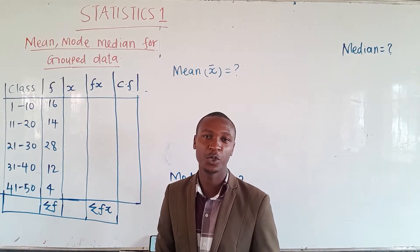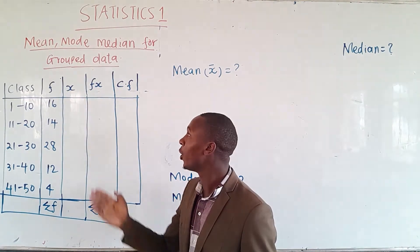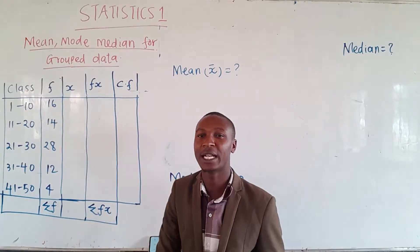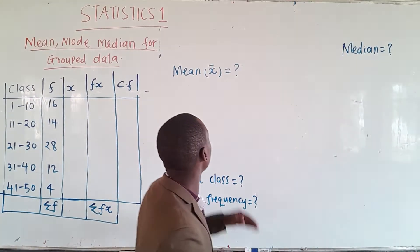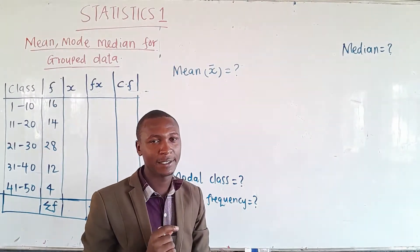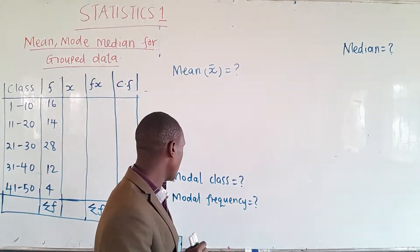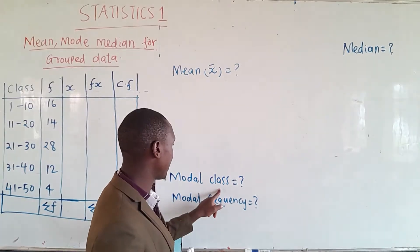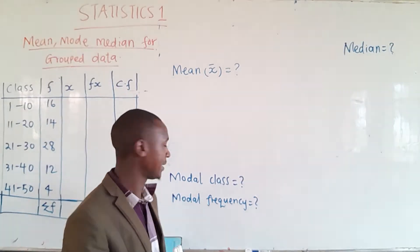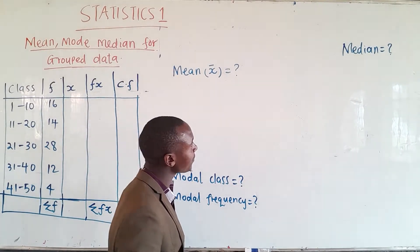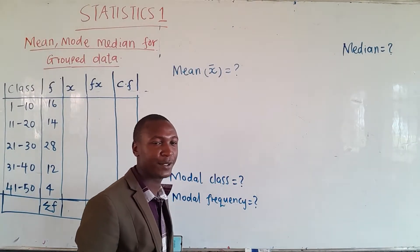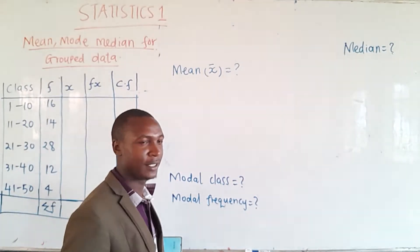We're going to show you how to work with all these columns. These are the values we need to calculate the mean — sometimes written as x̄. We are also supposed to work out the modal class, state the modal frequency, and at the end we will also calculate the median of this data.